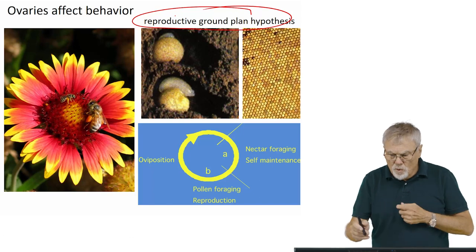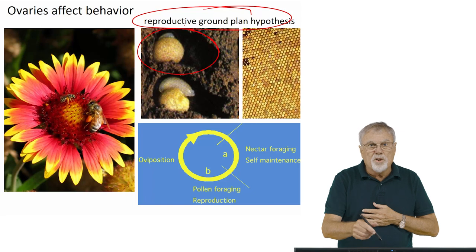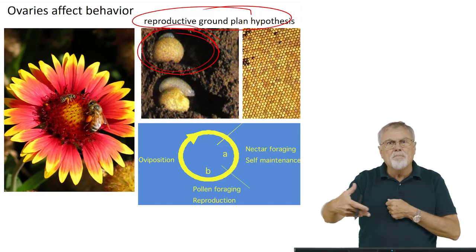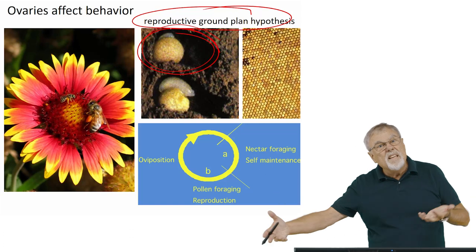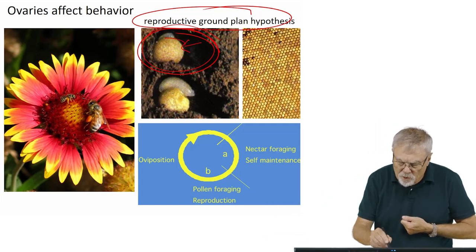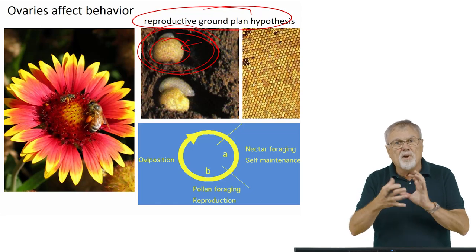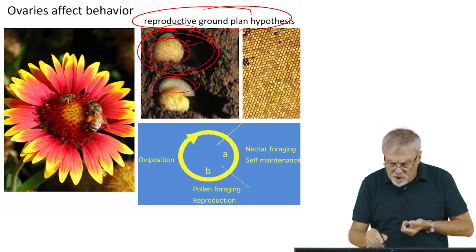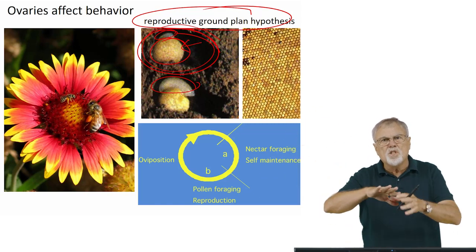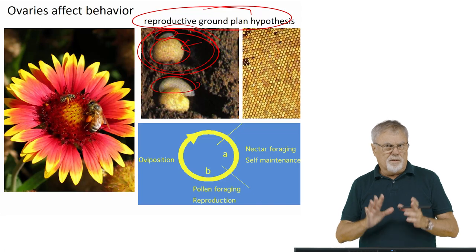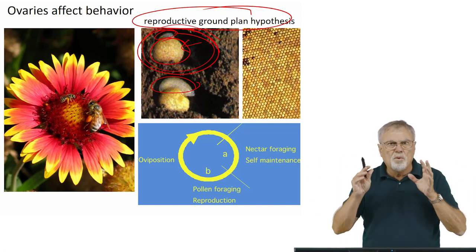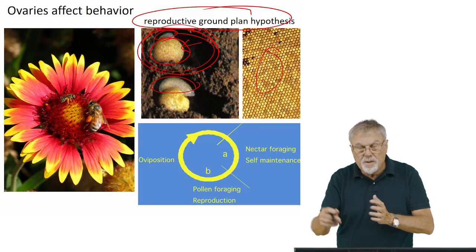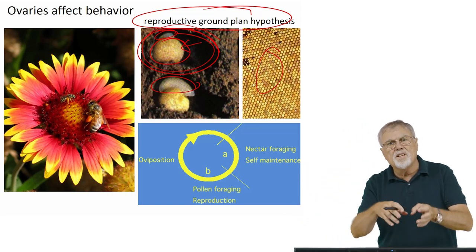The reproductive ground plan hypothesis proposes that solitary bee species, individual females, will go out and burrow in the ground to make a nest with cells. The female collects protein — pollen — packs it along with a little nectar, and lays an egg on top. The egg hatches, the larva consumes the pollen, and develops into an adult. This is the cycle of solitary bees: when their ovaries are developed, they forage for protein resources and provision nests to lay eggs and provide for their offspring.